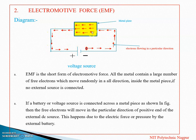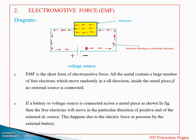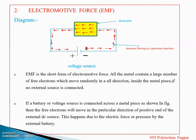अगर voltage source या battery हम remove कर देते हैं तो यह electrons या current randomly flow होंगे — उसका direction fix नहीं रहेगा। कुछ electrons positive to negative flow होंगे तो कुछ negative to positive flow होंगे। और यह जो electrons positive end to negative end या negative end to positive end तक flow हो रहे हैं — उन्हें flow होने के लिए जो force लग रहा है उसी को हम बोलते हैं electromotive force, यानि EMF। EMF का unit होता है volt।